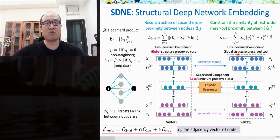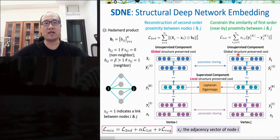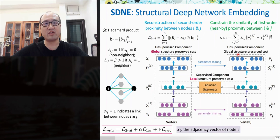Structured Deep Network Embedding (SDNE) is another deep neural network-based supervised graph representation learning method. SDNE is not specifically for attribute GRL, but it is worthwhile because it is rare to use deep neural networks for node embeddings and SDNE has strong performance. We will show that SDNE can be extended to attribute GRL in the next slide.